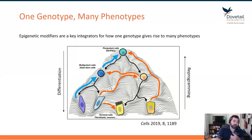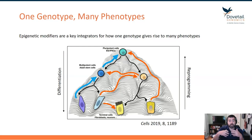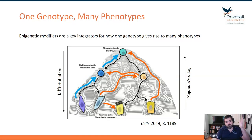Those epigenetic changes occur through methylation, acetylation, different types of chromatin folding, and things like that. As different epigenetic modifiers occur, one genotype can give rise to many different phenotypes. This is differentiation, highlighted on the arrow on the left-hand side of that image.